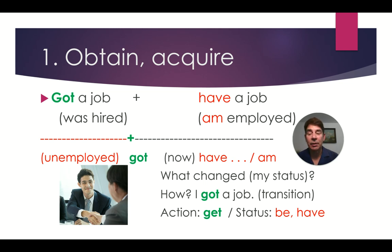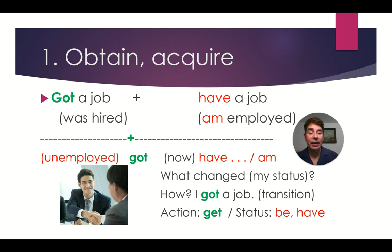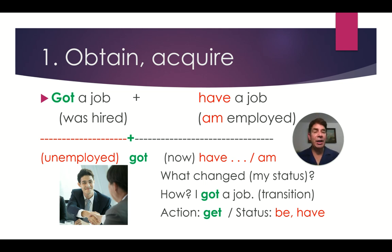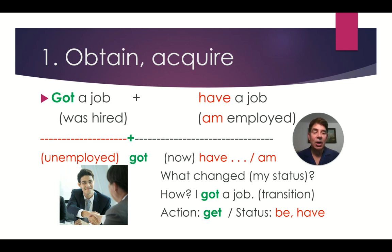Let's look at another example. Think of the previous situation. I was unemployed. Then, what happened? I got a job. Now I am employed, or I have a job. What changed? My status. How did it change? I got a job. So the action is GET, and the status is BE or HAVE. I am employed. I have a job.